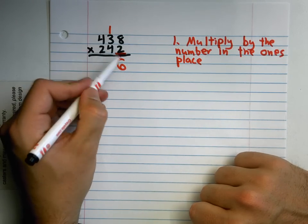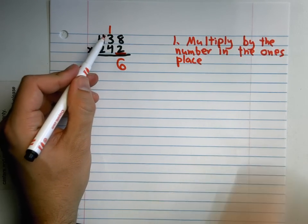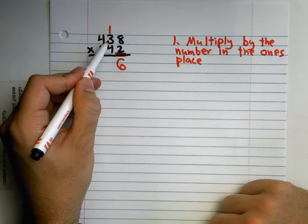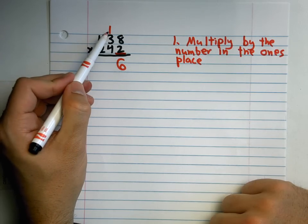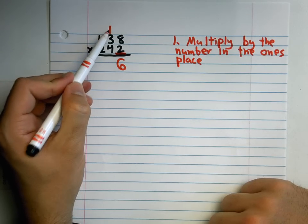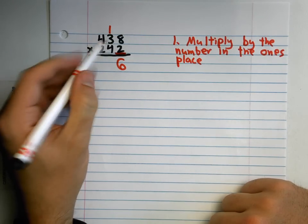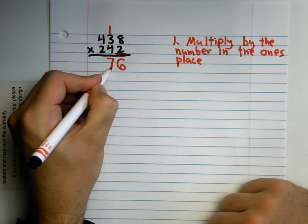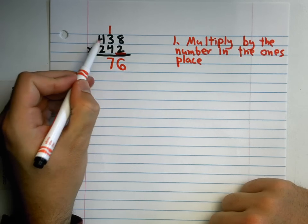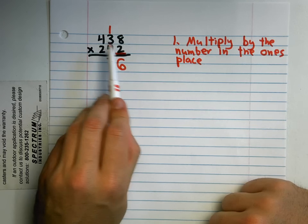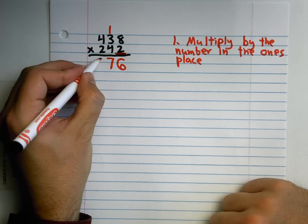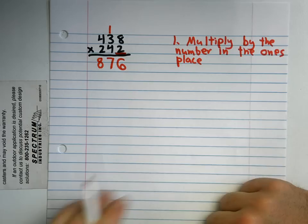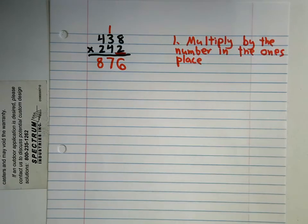2 times 3 is 6, but I have this 1 up here, so we add this number up here. 2 times 3 is 6 plus 1 is 7. Then we go 2 times 4, so we're moving across the ones, tens, hundreds. 2 times 4 is 8.